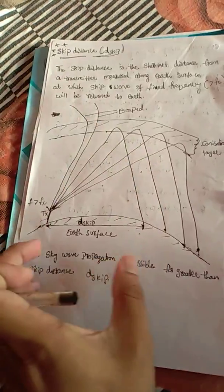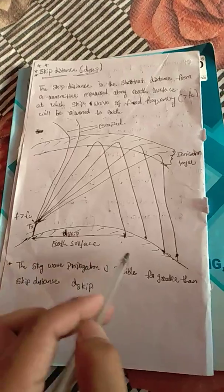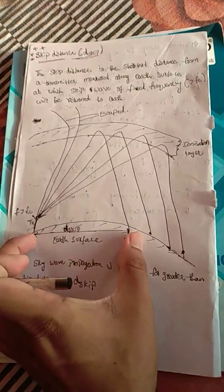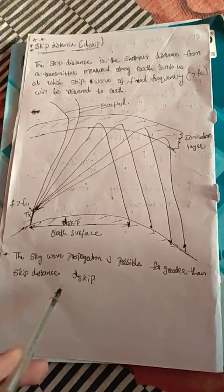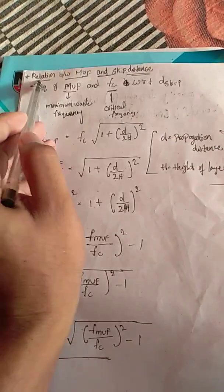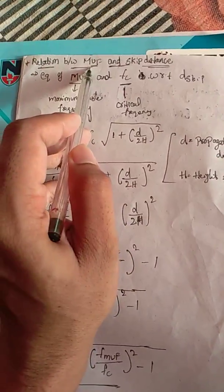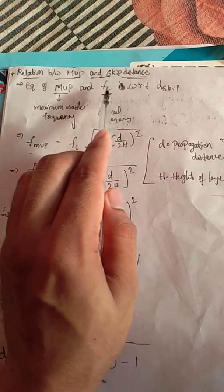For waves traveling greater than the skip distance, sky wave propagation is possible. There is another very important relation: the relation between MUF — Maximum Usable Frequency — and skip distance.